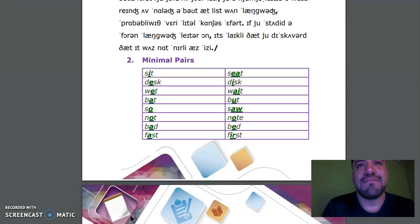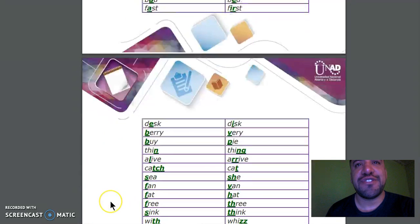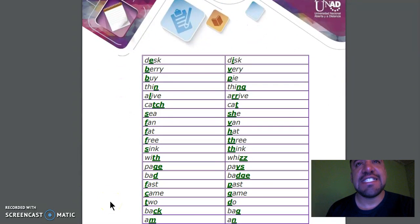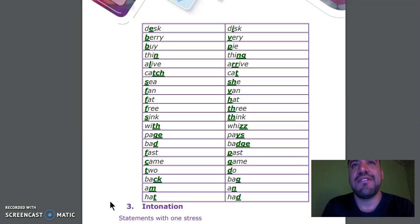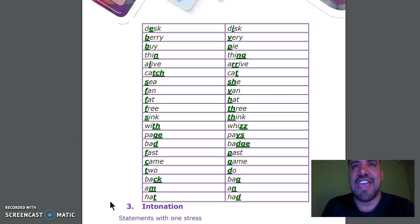Bat, bed. Fast, first. Desk, disk. Berry, very. Buy, pie. Thin, thing. Life, rife. Catch, cat. See, she. Fan, van.